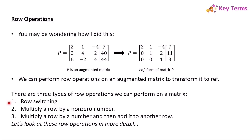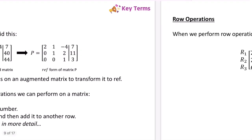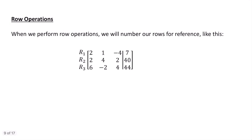When performing row operations, we use abbreviations to indicate what we're doing. We number our rows as R1, R2, and R3, where the numbers are subscripts. Let's start off with row switching, where we switch the position of two rows.